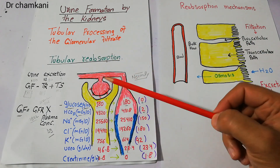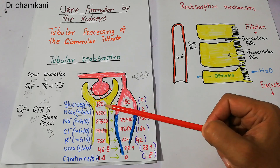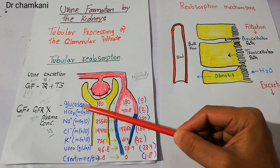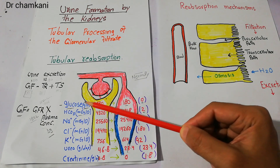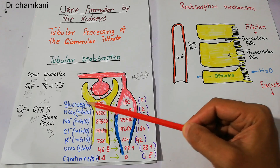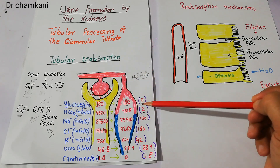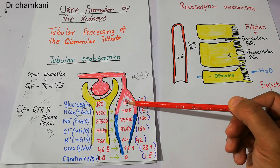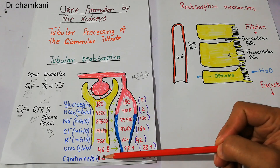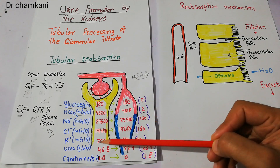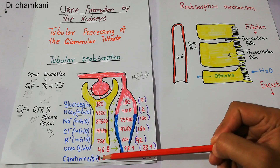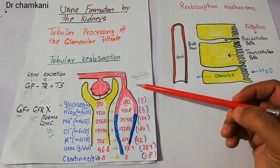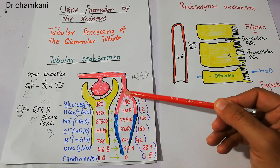The concentration of different substances in the proximal tubule and the excreted urine is different. For example, the amount of glucose filtered per day is 180 grams per day, and the amount of glucose excreted in urine is zero, because almost 100% of this glucose is reabsorbed into the peritubular capillaries. For creatinine, the amount filtered in the proximal tubule is 1.8 grams per day and the amount excreted in urine is also 1.8 grams, so almost 0% of creatinine is reabsorbed.